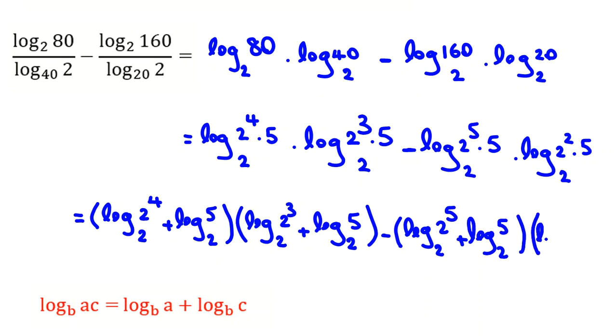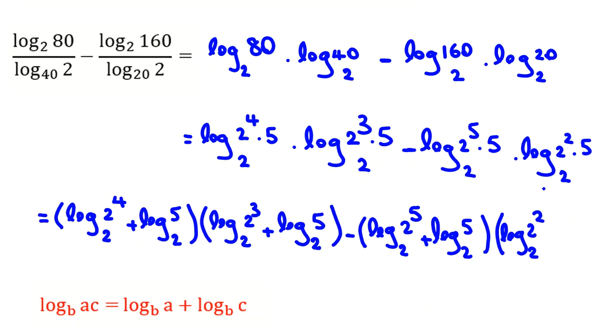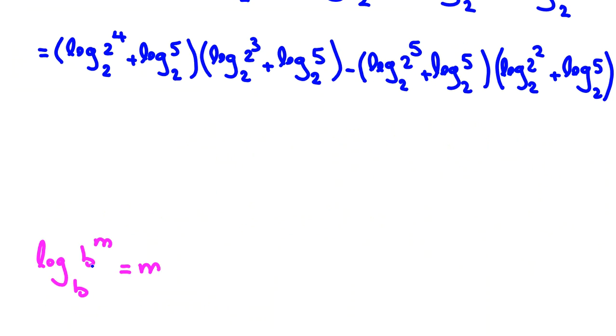And the last one is log base 2 of 2 squared plus log base 2 of 5. We want to calculate this. Now, we use this rule: log base 2 of 2 to the 4 is 4, this part is 3, this part is 5, this part is 2.